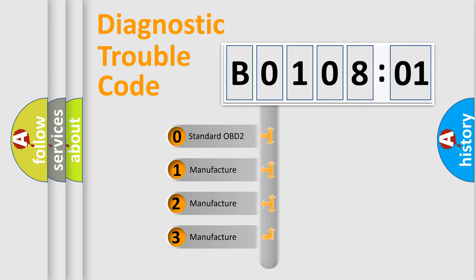If the second character is expressed as zero, it is a standardized error. In the case of numbers 1, 2, or 3, it is a more precise expression of the car-specific error.